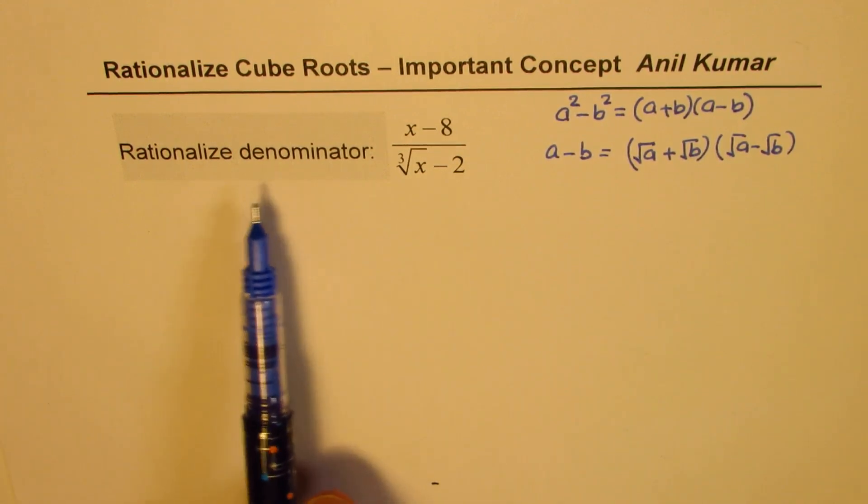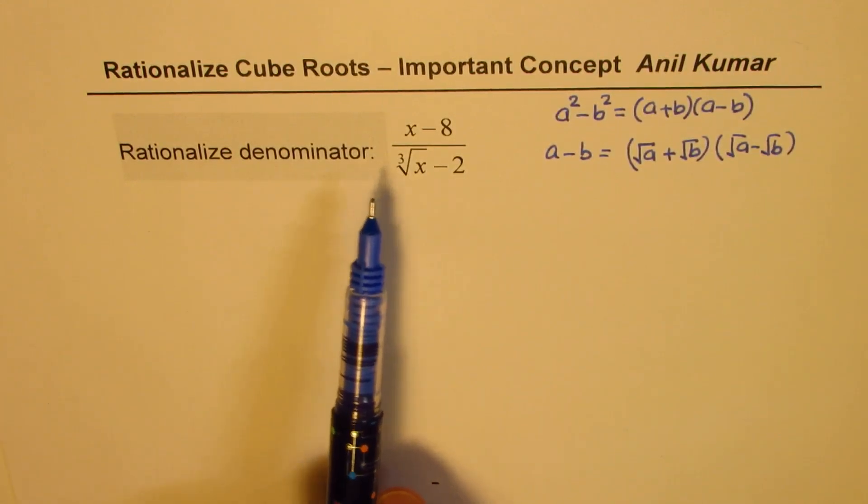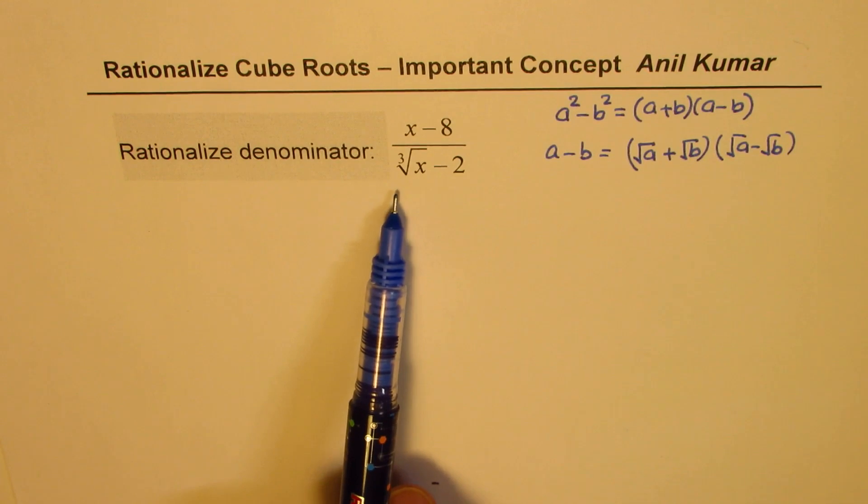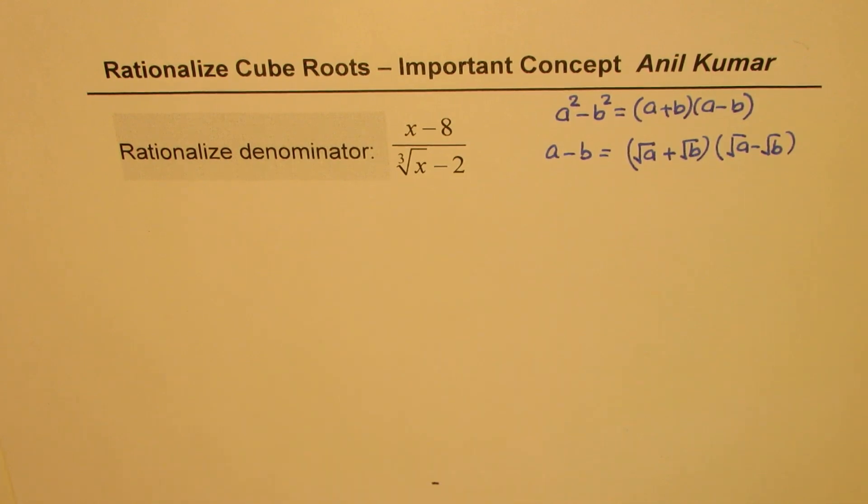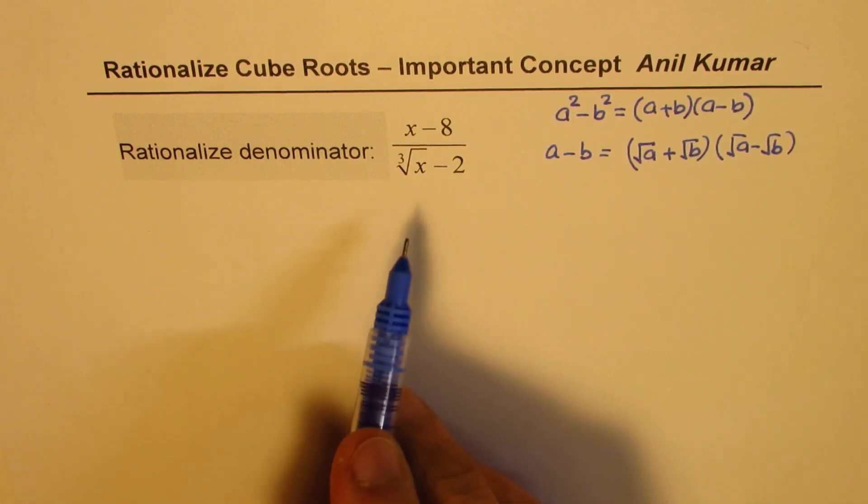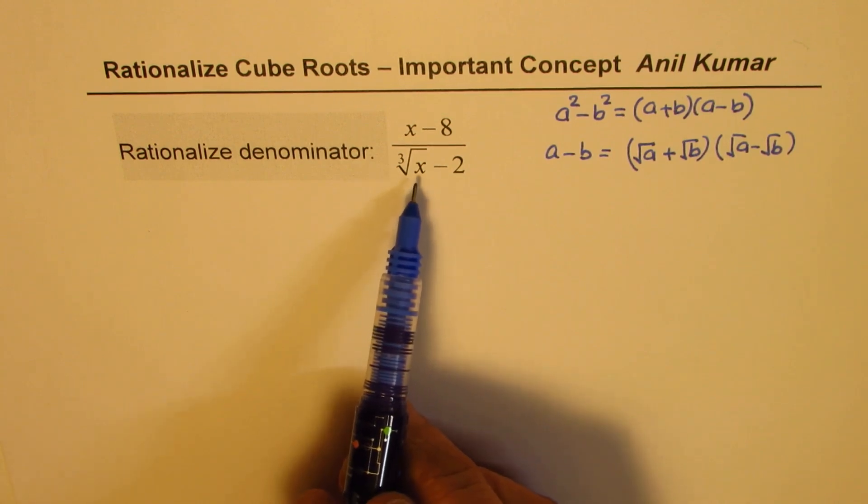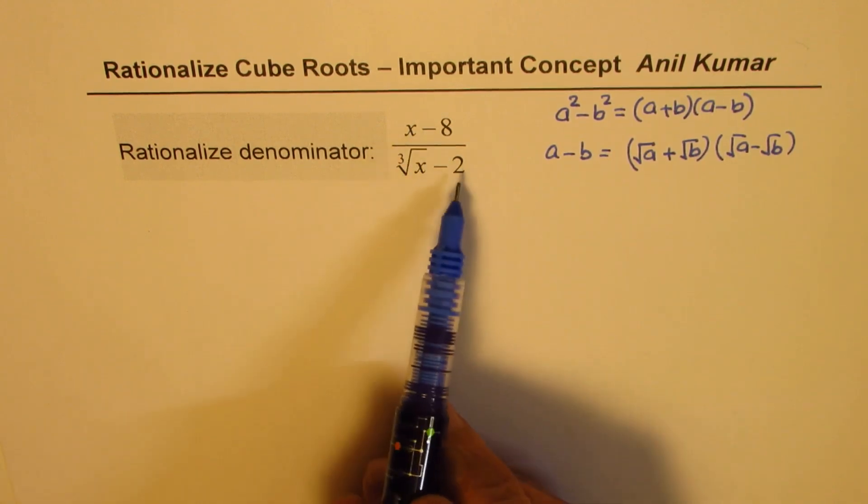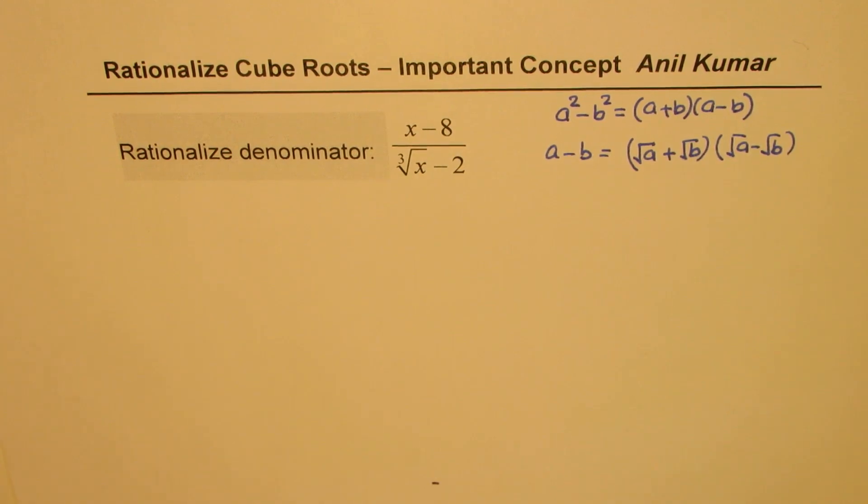What should we do to rationalize denominator of the function x minus 8 divided by cube root of x minus 2? Well, you can see that cube of cube root is x and 2 cube is 8, so we do have a relation here.